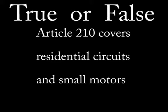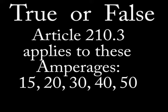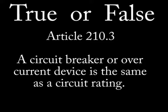True or false. Article 210 covers residential branch circuits and small motors. Number 2: Article 210.3 applies to these amperages — 15, 20, 30, 40, and 50 amps.